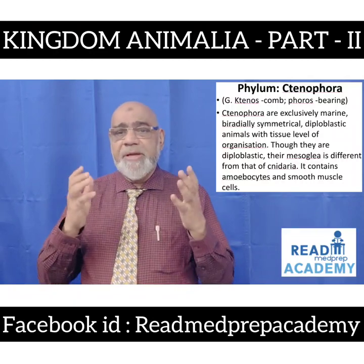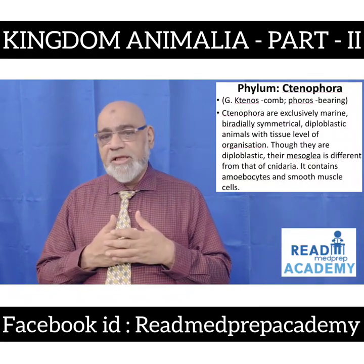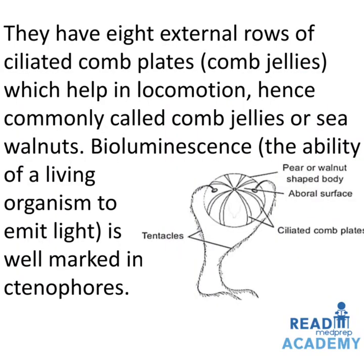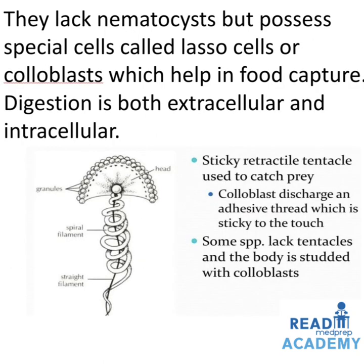Ctenophores are exclusively marine, bi-radially symmetrical, diploblastic animals with tissue level of organization. Though they are diploblastic, their mesoglea is different from that of Cnidaria — it contains amoebocytes and smooth muscle cells. They have eight external rows of ciliated comb plates which help in locomotion, hence commonly called comb jellies or sea walnuts. Bioluminescence — the ability of a living organism to emit light — is well marked in ctenophores. In the image you can see the tentacles, the ciliated comb plates, and the aboral surface of the pear- or walnut-shaped body.